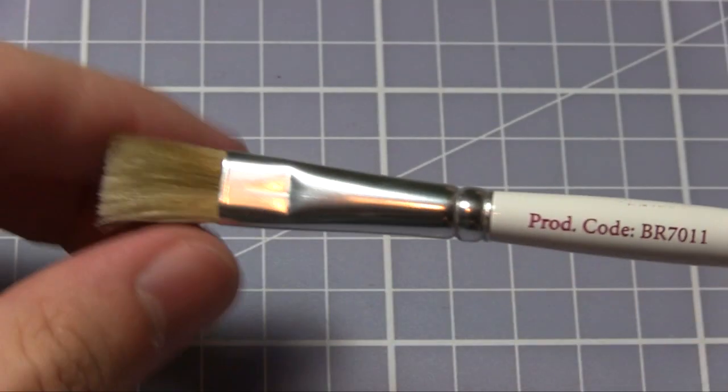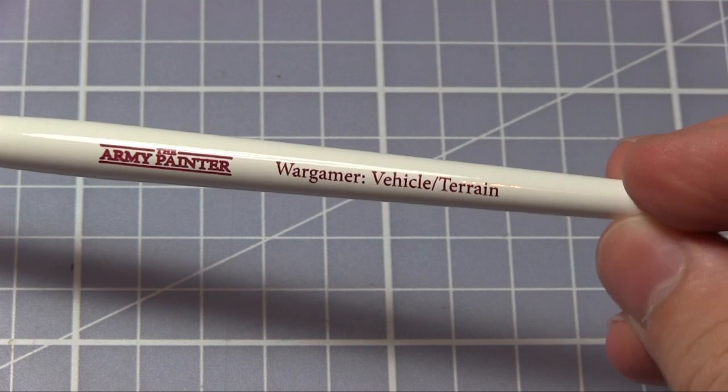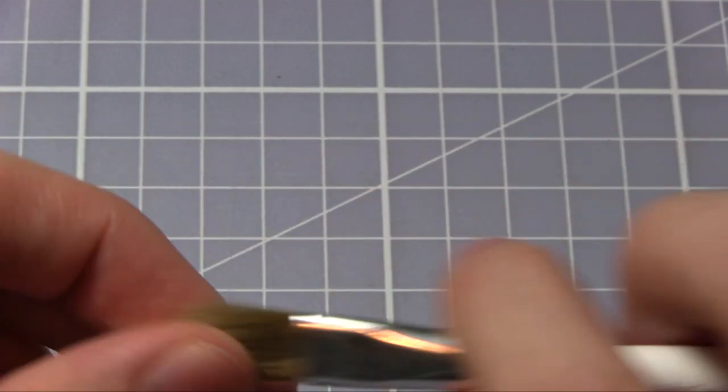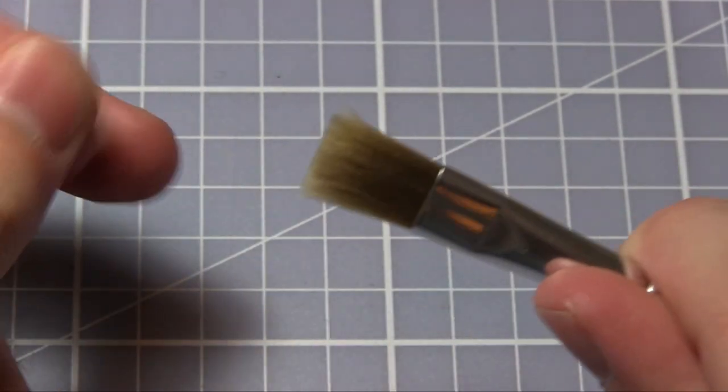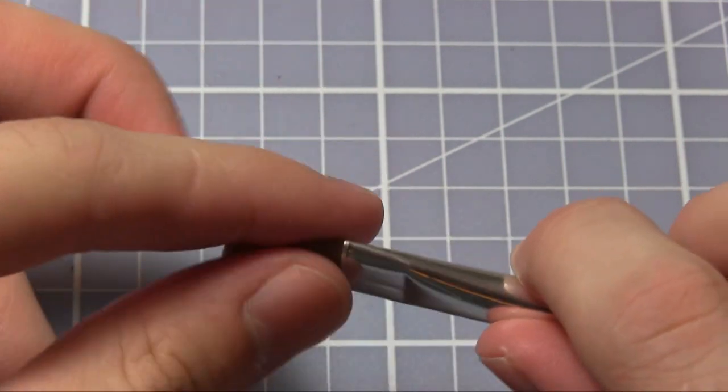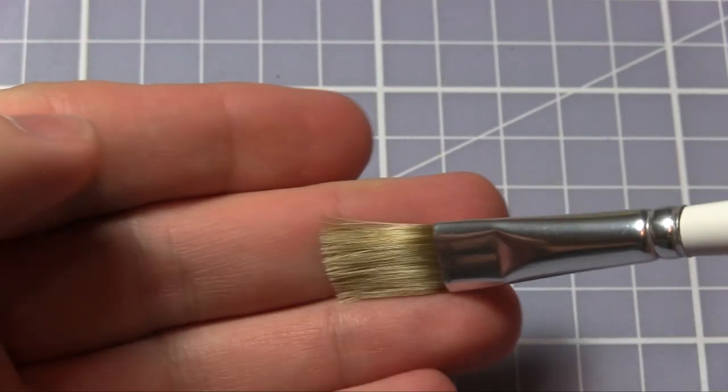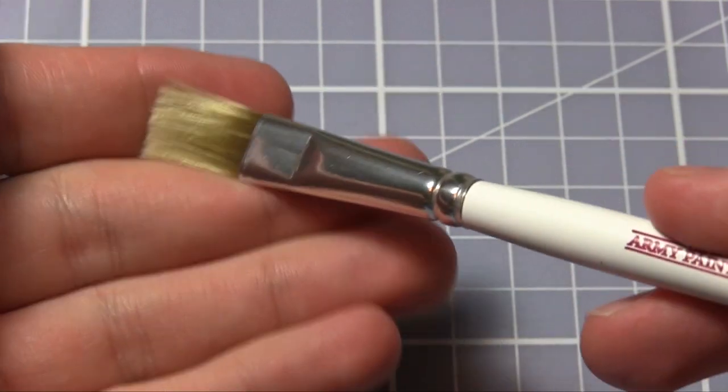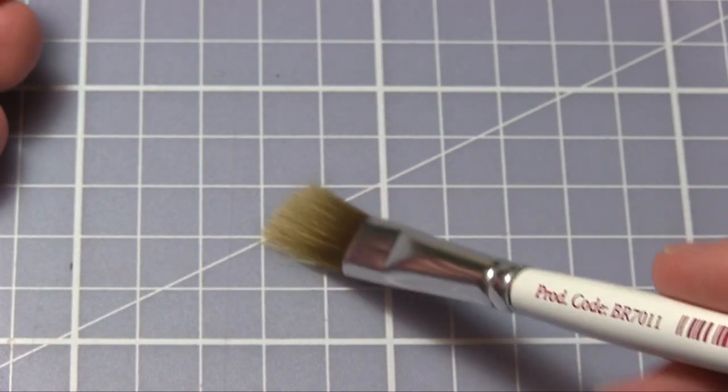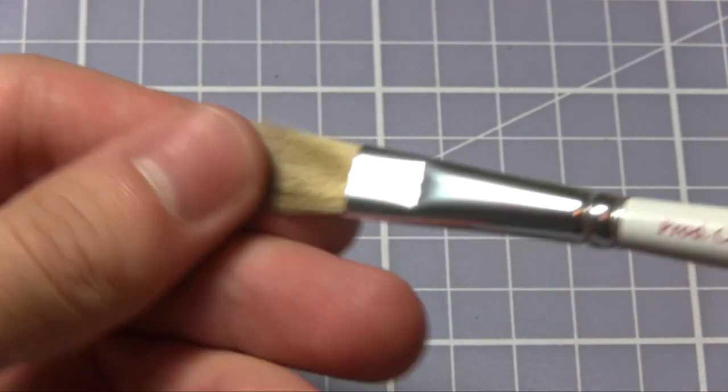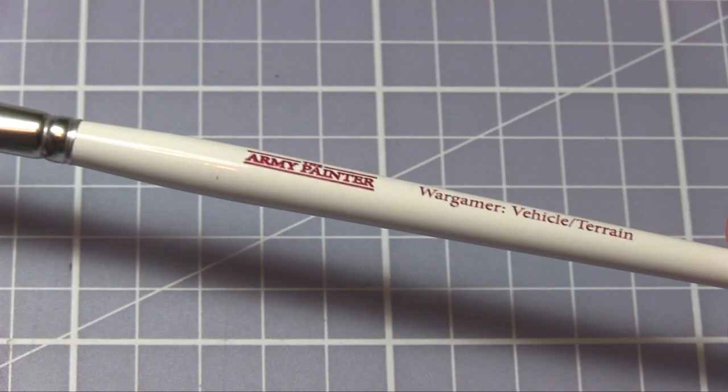So the first brush to look at will be the Wargamer Vehicle Terrain Brush. As you can see, it's the largest of the Army Painter selection. It's a flat, quite large sized brush here which is perfect for dry brushing scenery and terrain, and it's really good for getting quick application on large areas where smaller brushes would just take much too long.